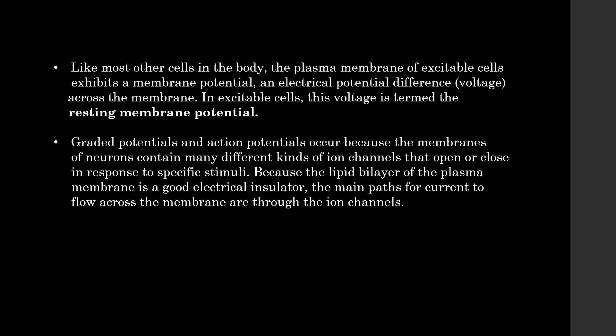Like most other cells in the body, the plasma membrane of excitable cells exhibits a membrane potential — an electrical potential difference across the membrane. In excitable cells, this voltage is termed the resting membrane potential. Graded potentials and action potentials occur because the membrane of neurons contains many different kinds of ion channels that open or close in response to specific stimuli. Because the lipid bilayer of the plasma membrane is a good insulator, the main path for current to flow across the membrane is through ion channels.